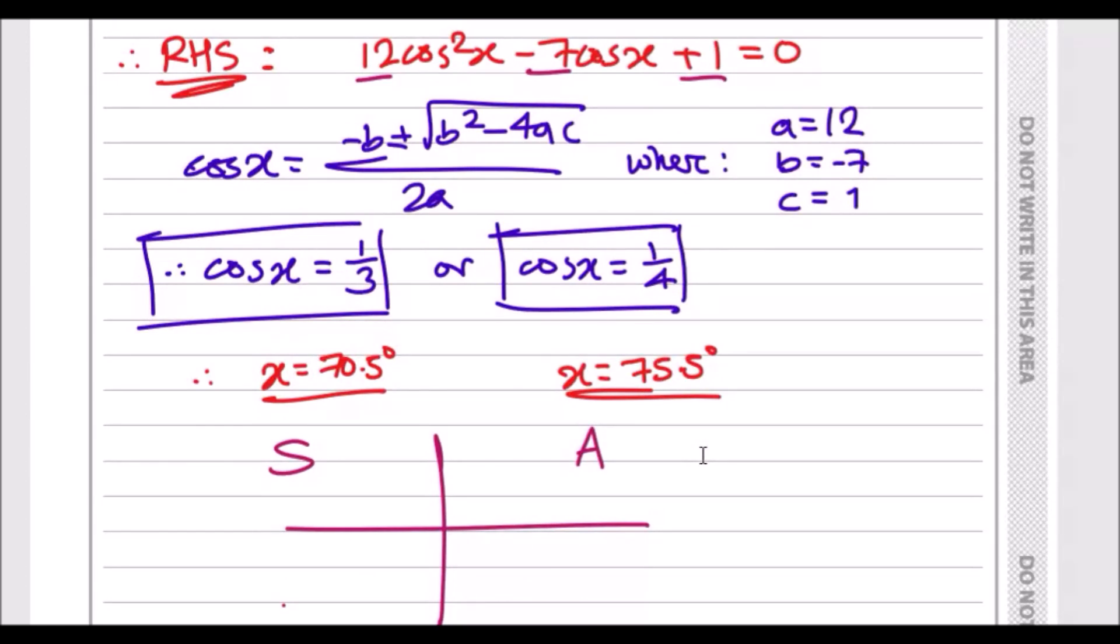Your calculator might say arc cos or cos to power negative one - they're both the same thing. Your calculator should be written like this or it could be written like this. Both of these are the same, it's just different notation, different calculator regions have different ways of writing it down.